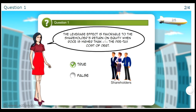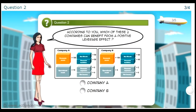In other words, the company should achieve a higher operating income than the net finance cost in order to take advantage of the leverage effect and deliver a higher return on equity. According to you, which of these two companies can benefit from a positive leverage effect? Let's compare for these two companies the cost of borrowing and the ROCE.